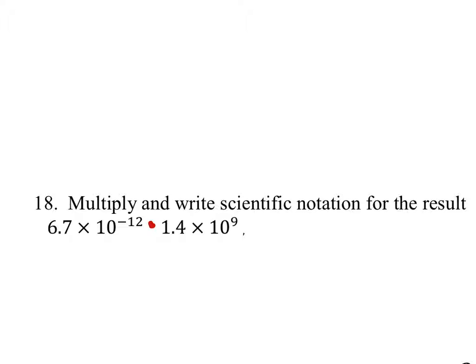The reason why we would want to do that is because now we can use the commutative property to move all of the factors next to each other. So 6.7 times 1.4, and then I have my base tens: 10 to the power of negative 12 times 10 to the power of 9.